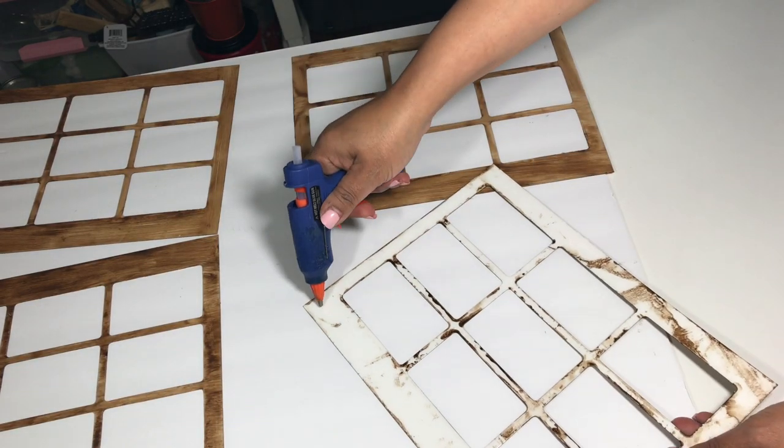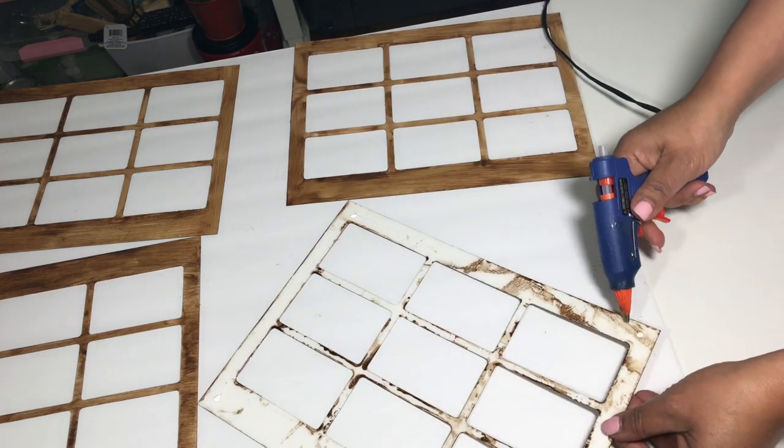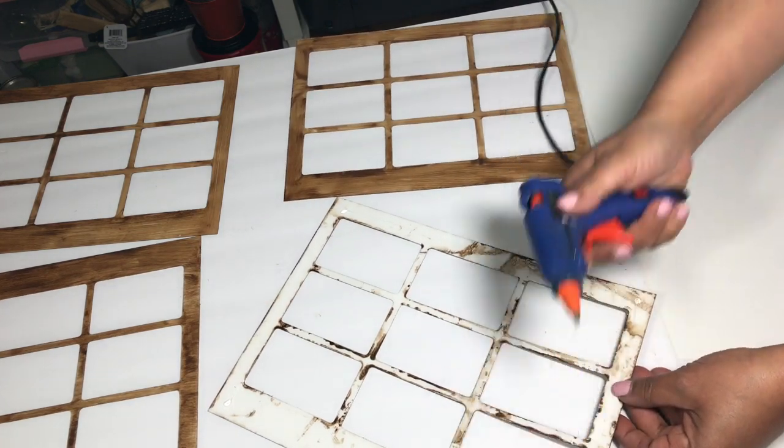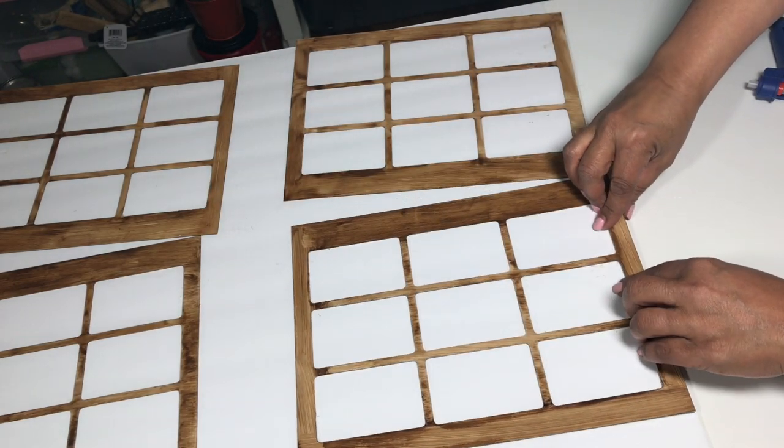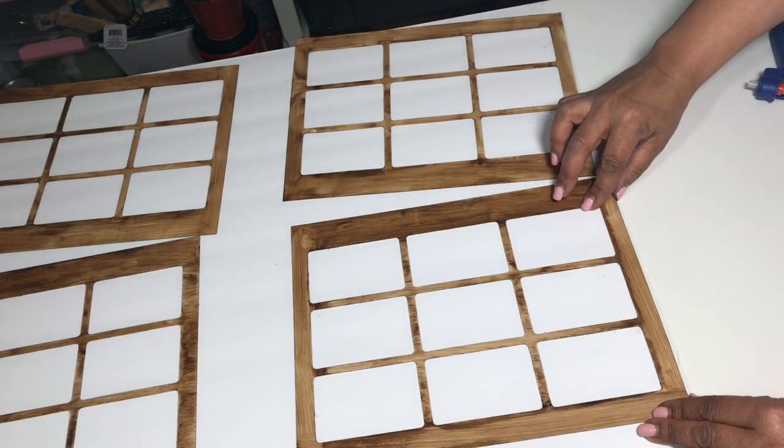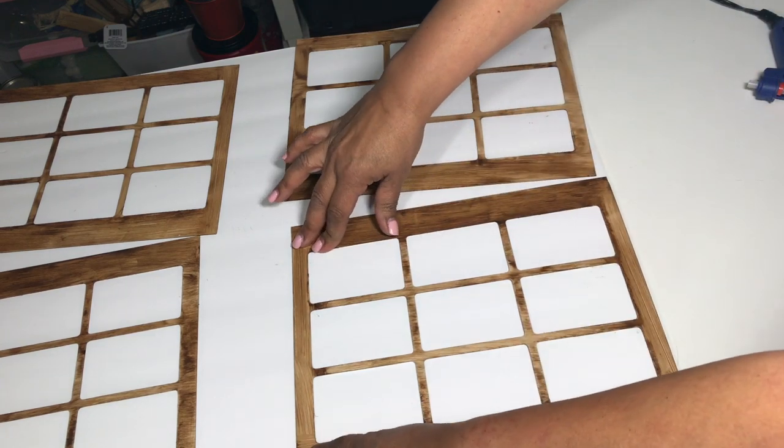Now that these are dry, I'm going to try and make this look like a window. So what I do is just add a little bit of hot glue, and I glue the sheets down vertically, starting at the bottom, creating a square shape. You'll see what I mean. It's easier for me to show you than to explain it sometimes.